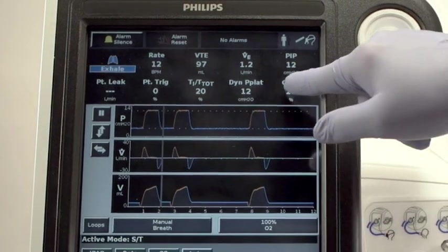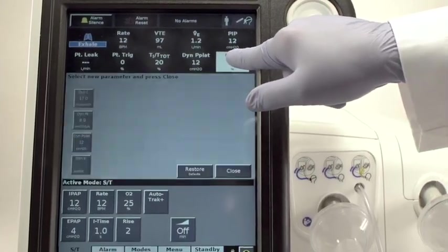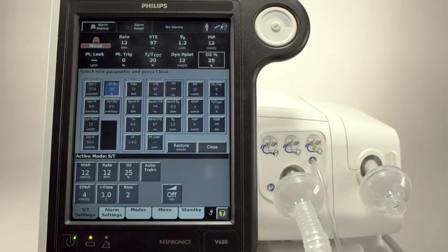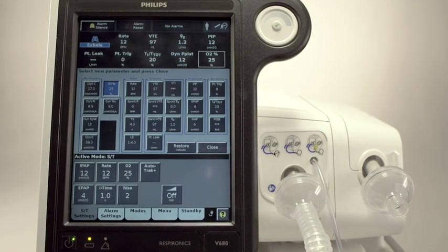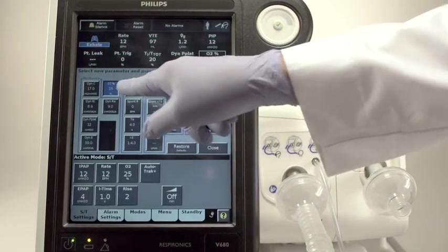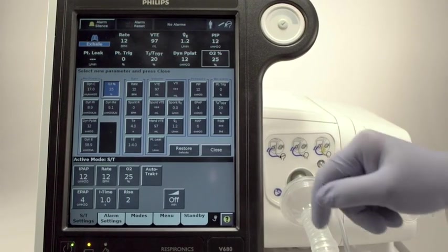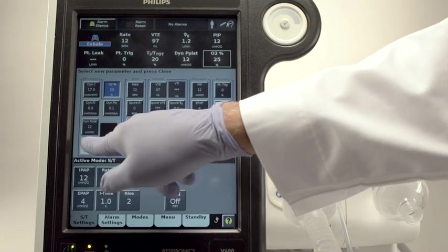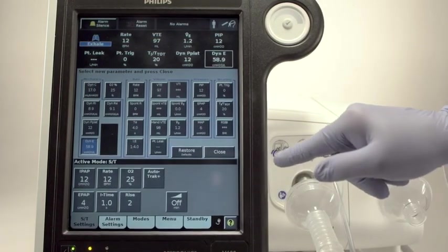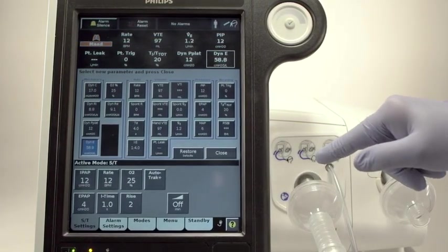Touch any of the nine display fields for two seconds to expand the full 23-parameter menu selection window. Note the field you touched is highlighted in blue. Within the expanded menu of parameters, select the one you wish to place in this field. Active parameters for the current ventilation mode have a numerical display. Inactive parameters are dashed out.